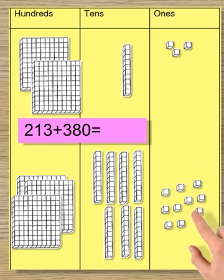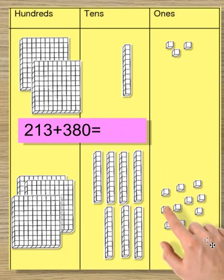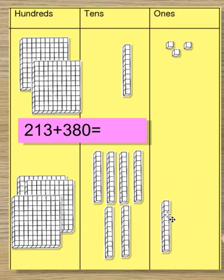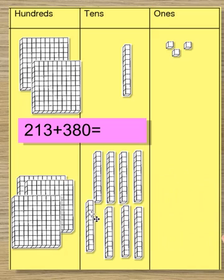Well how many are here now? 1, 2, 3, 4, 5, 6, 7, 8, 9, 10. Well if that's 10, that gets renamed, doesn't it? 10 ones makes, you know what it is, 110. And then we'll just put it here.